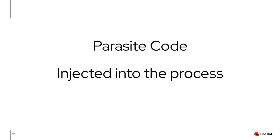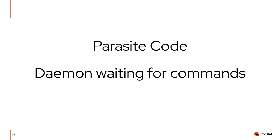The parasite code is injected into the target process, and then the process continues to run the parasite code. The parasite code is now kind of a daemon running inside the process to be checkpointed, and the daemon waits for commands from the main CRIU process. So the main CRIU process can now talk to the process it wants to checkpoint via the parasite code daemon, telling the destination process: write all your memory pages to disk, give me information which can only be retrieved from within the address space of the process.